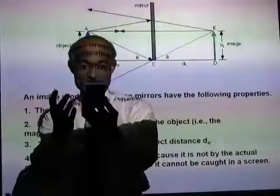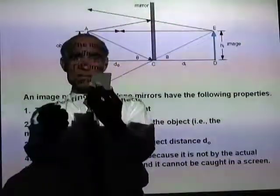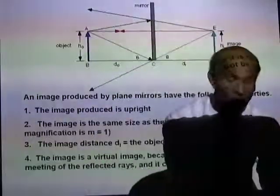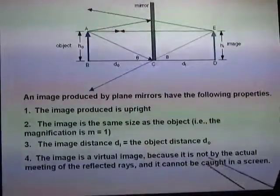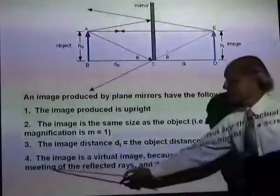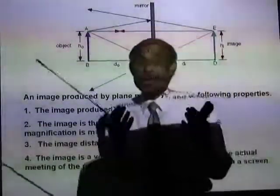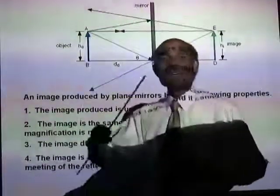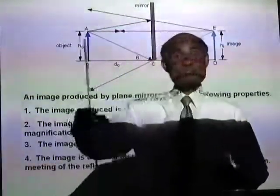If I now look at my image, can I catch it? It's simply not there — it's an illusion. It's a virtual image because it is not formed by the actual intersection of the rays. If an image is formed by the actual intersection of reflected rays, then it can be caught on a screen — then it is a real image. This is not a real image.